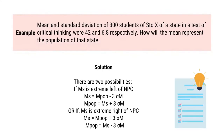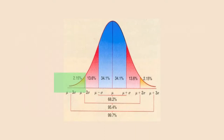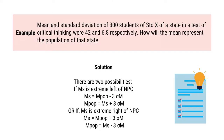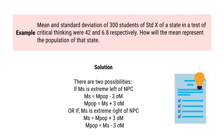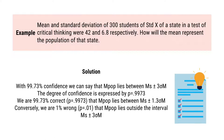There are two possibilities. If the sample mean is at the extreme left of the normal probability curve, then sample mean equals population mean minus 3 sigma m, meaning population mean equals sample mean plus 3 sigma m. Alternatively, if the sample mean is at the extreme right of the normal probability curve, then sample mean equals population mean plus 3 sigma m, meaning population mean equals sample mean minus 3 sigma m. With 99.73% confidence, we can say that the population mean lies between sample mean plus minus 3 sigma m.